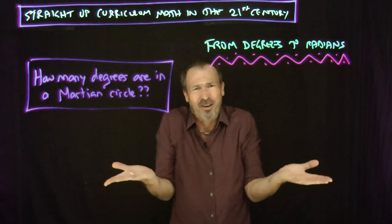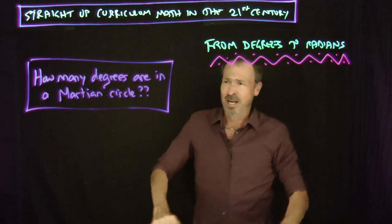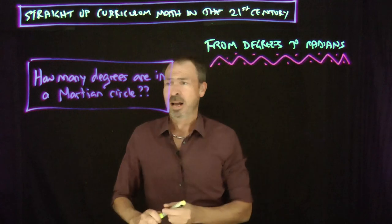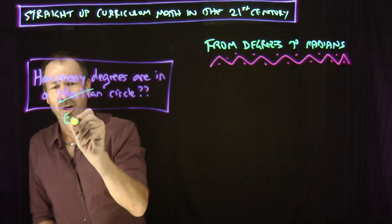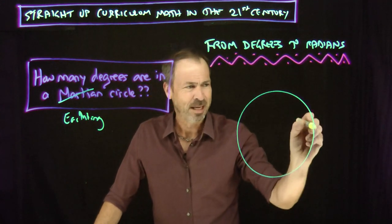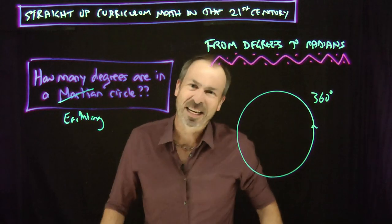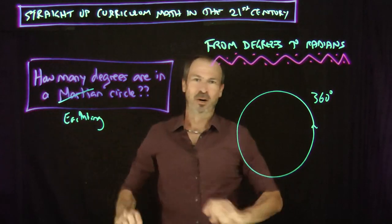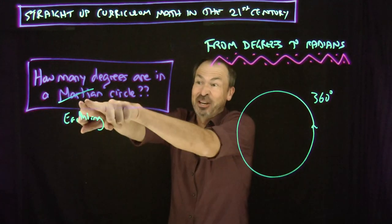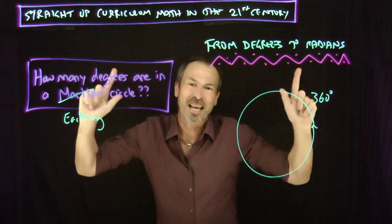But, you know, then you start saying, well, hang on, it can't be as simple as that, something strange is going on here. How many degrees are in a Martian circle? And I realize, I actually don't know the answer. I guess the question I just answered is this one. I've answered, how many degrees are in an Earthling circle?